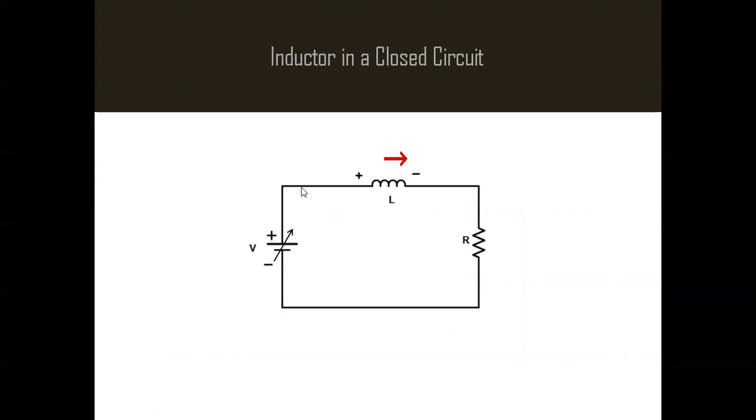From this point, the inductor behaves like a straight wire and the current now in the circuit can only be restricted by this resistor.